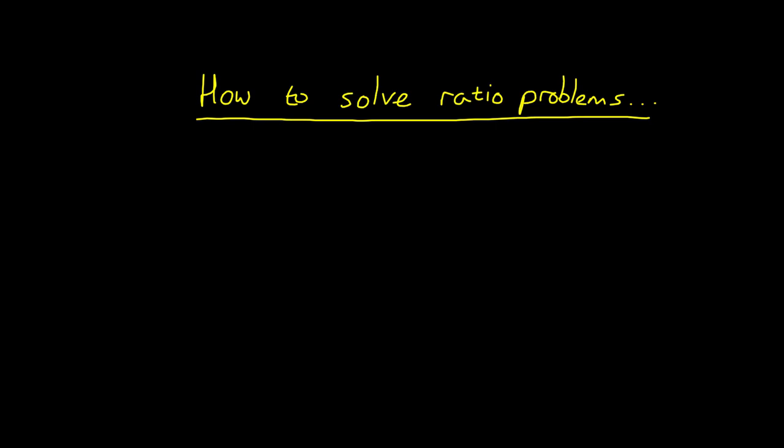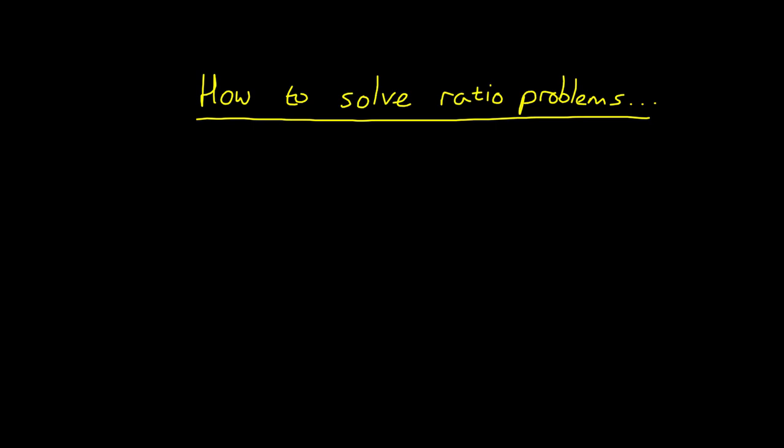Let's try the current question as an example. What would happen to the current in a wire if its diameter doubled? First, let's write out what we know and what equations may be useful. Don't worry if you haven't studied this topic yet. This video is all about a mathematical method rather than the physics of electric current.